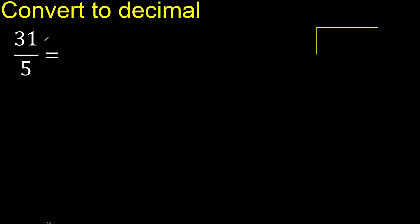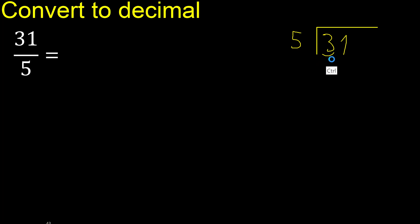31 divided by 5. 3 is less, therefore next. 31 is not less — therefore with 31, 5 multiplied by which number is nearest to 31 but not greater?